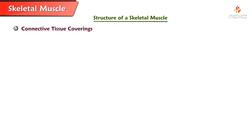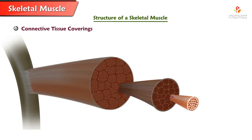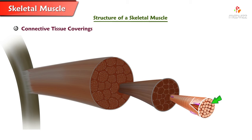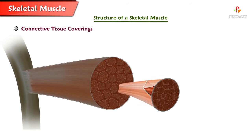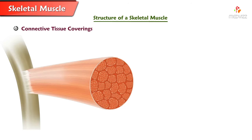Connective Tissue Coverings. Each muscle fiber of the skeletal muscle is wrapped in a thin, delicate layer of connective tissue called endomysium. Many muscle fibers are bundled together into groups called fascicles. Each fascicle is wrapped in a second layer of connective tissue made of collagen called perimysium. Many fascicles are bundled together to form a skeletal muscle, and each skeletal muscle is covered by a third layer of dense, fibrous connective tissue called epimysium.